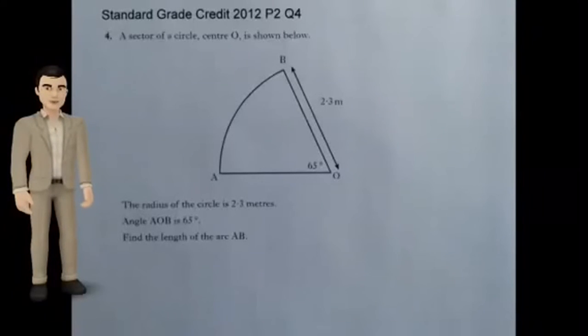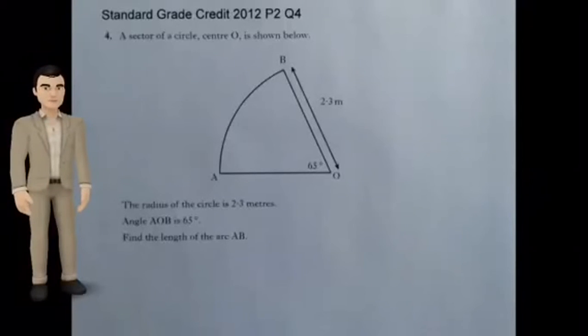A sector of a circle centre O is shown below. The radius of the circle is 2.3 metres. The angle AOB is 65 degrees. Find the length of the arc AB.